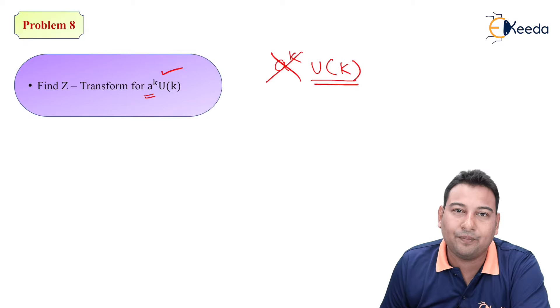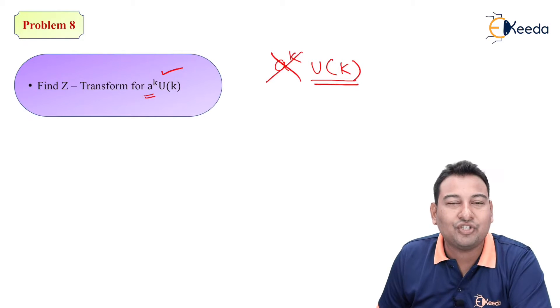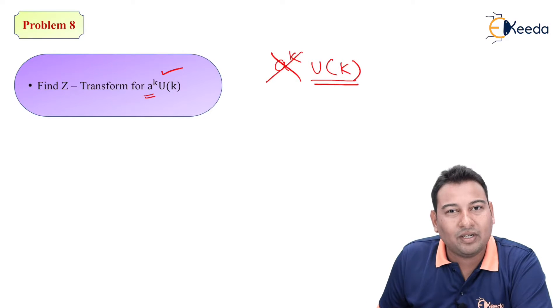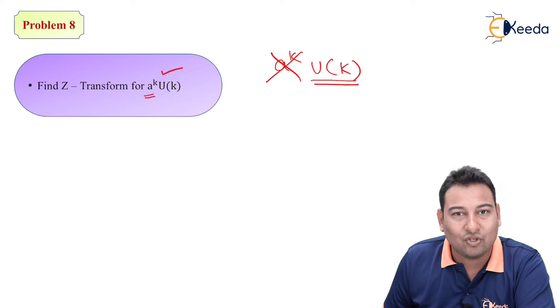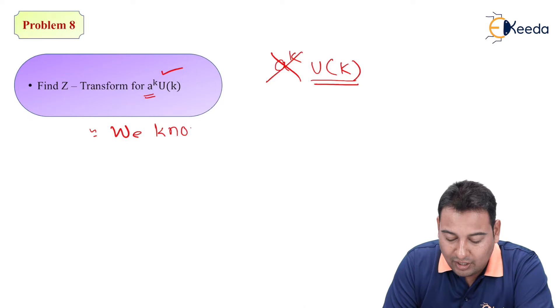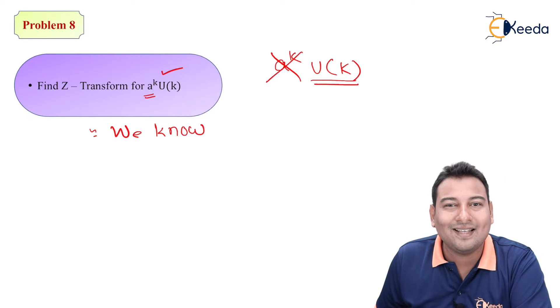So whichever property is given, first of all forget that property and whatever you are left with, find its z-transform. This is not true for this example alone, this is true for all the remaining examples. Always forget the property first and whatever you are left with, find that transform. So we're left with u(k).